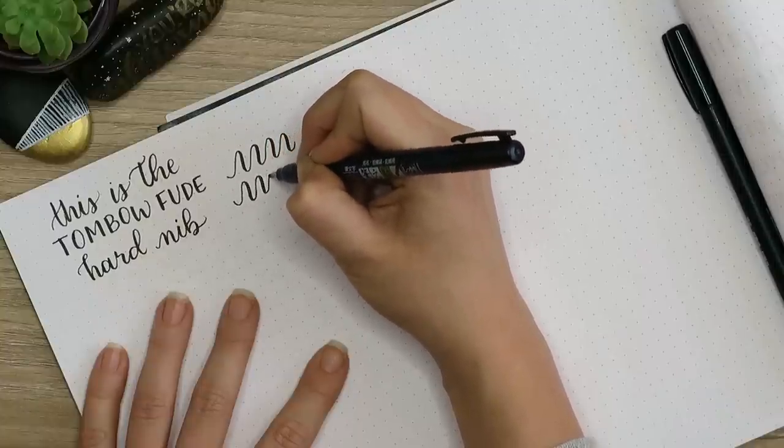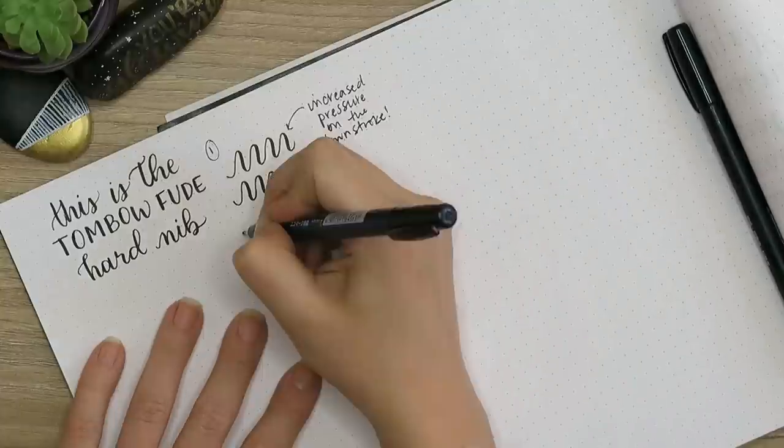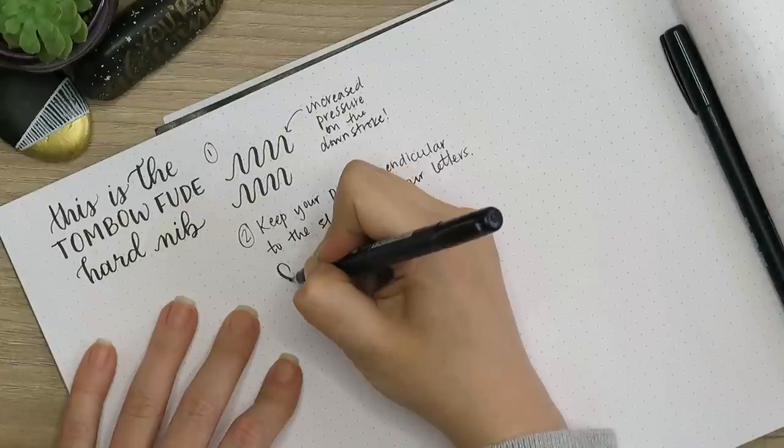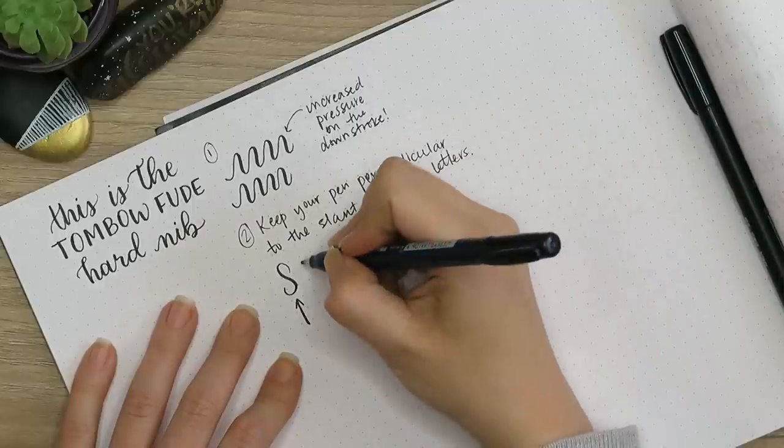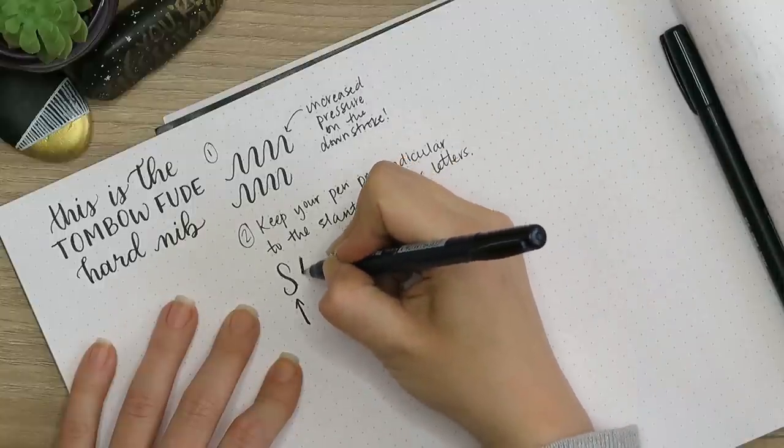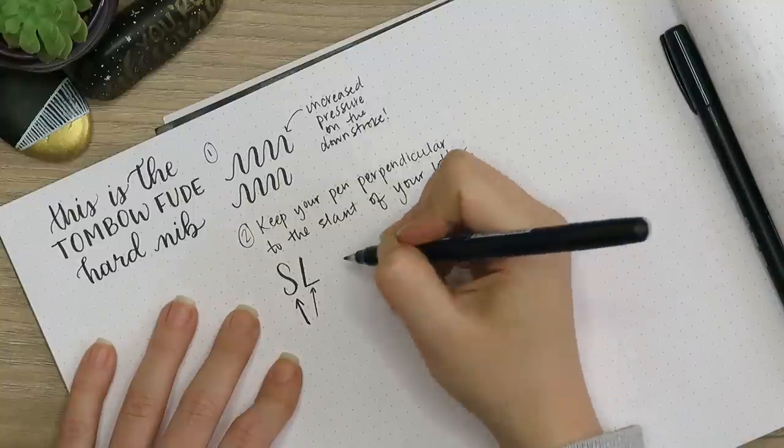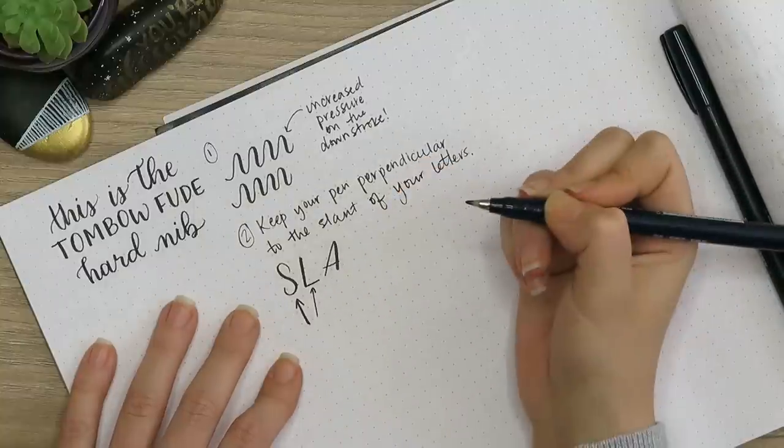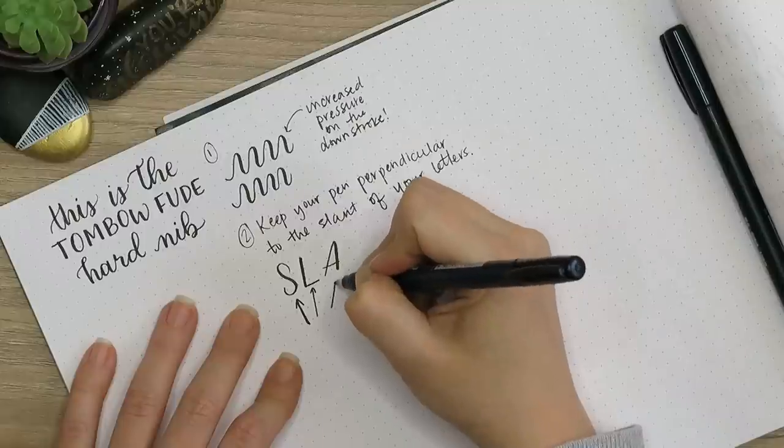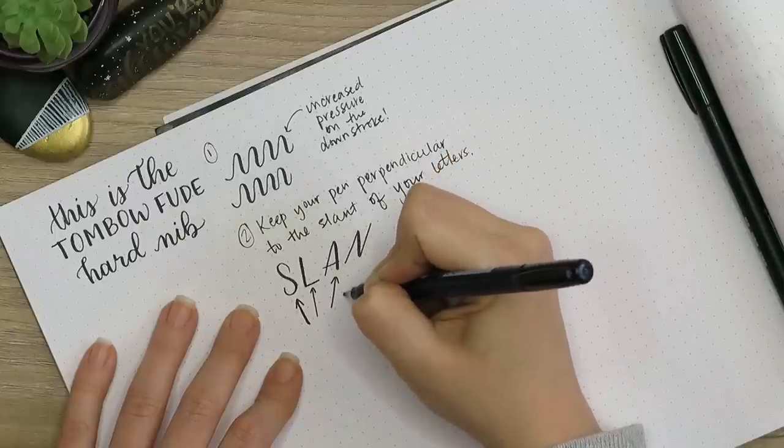The first thing you want to do is master those thick and thin lines with your pen. You're going to do that by increasing pressure on your downstroke, and you have to hold your pen a certain way or those thick thin lines aren't going to turn out how you hope. Every letter has a slant—that is the angle that is turned—and you have to turn your marker so that the nib is facing perpendicular to the angle of your slant.